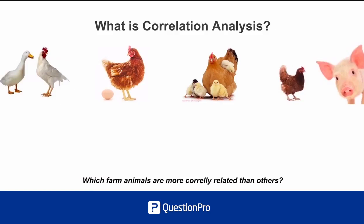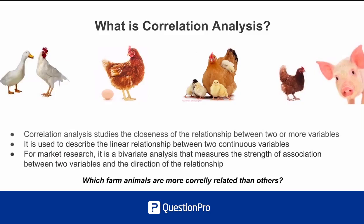Of the animals that you see on the screen, which ones are most closely related and least related to each other? All of these animals are ones that you may find on a farm. However, some of them are more closely related to each other than others. And correlation analysis can be thought of as these animals — it's all about relationships and how strong the relationship is between them.